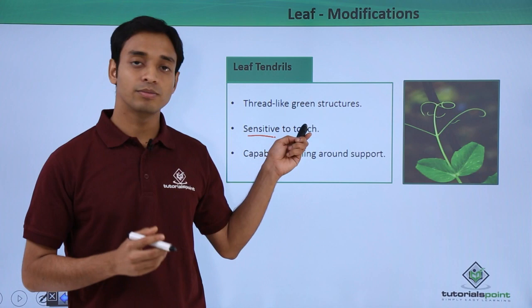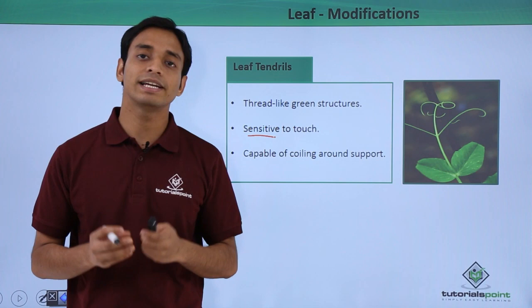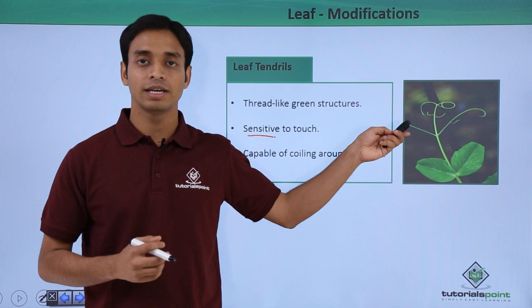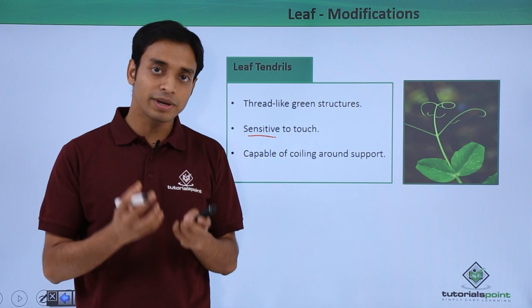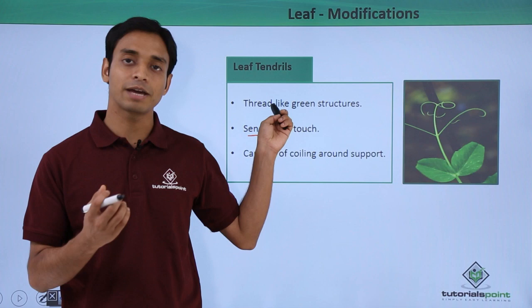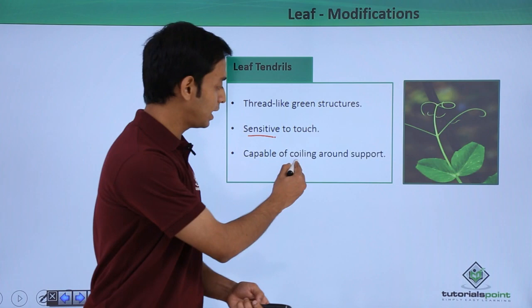These types of plants mostly have weak stems. Since the stem is weak and cannot support its own structure, they require the help of these tendrils which help in climbing. Otherwise, since they have weak stems, they would lie on the ground and cannot get proper sunlight because they would come under the shade of larger plants. So these leaf tendrils are very important in climbing up with the help of a support.